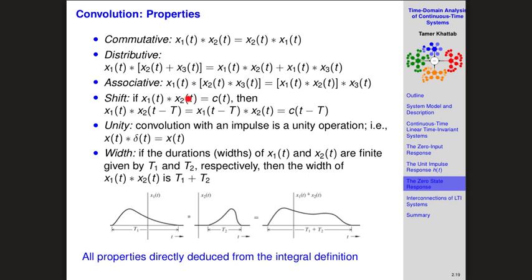Another property specific to convolution is the shift property. If X₁ convolved with X₂ gives C(t), and you shift one of the functions by a constant T, the result is C(t) shifted by that same T. If both functions are shifted — one by T₁ and the other by T₂ — the result is C(t − T₁ − T₂), so both shifts affect the output.